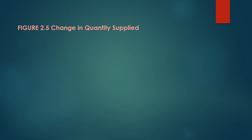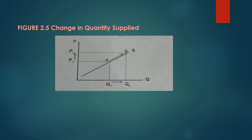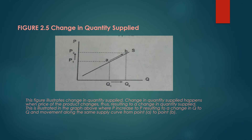We have here Figure 2.5 — the change in quantity supplied. This figure illustrates change in quantity supplied. Change in quantity supplied happens when the price of the product changes, thus resulting in a change in quantity supplied. This is illustrated in the graph where P increased to P prime, resulting in a change in Q to Q prime, and movement along the same supply curve from point A to point B.